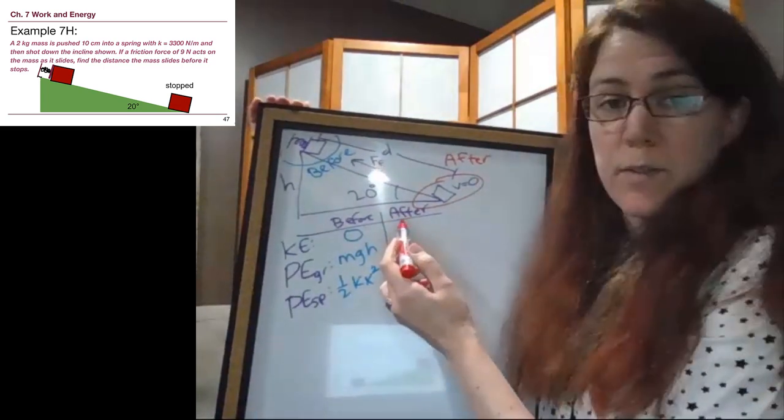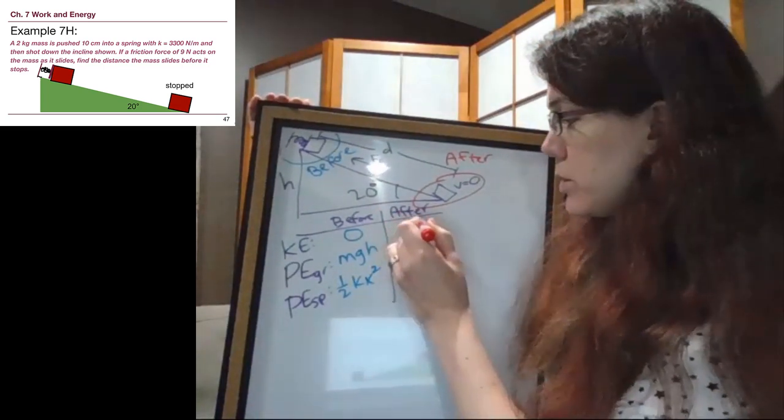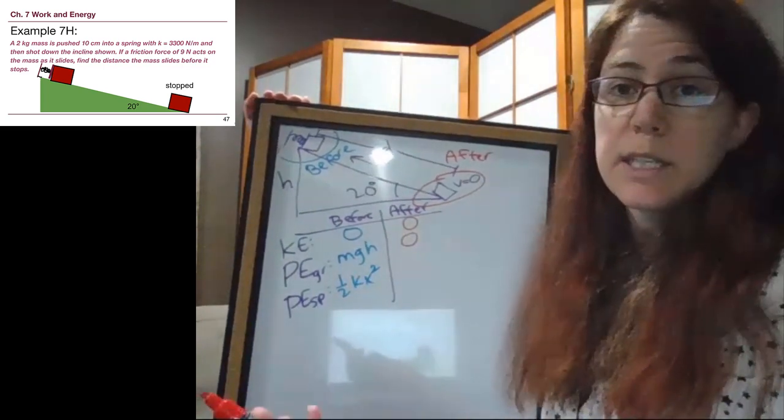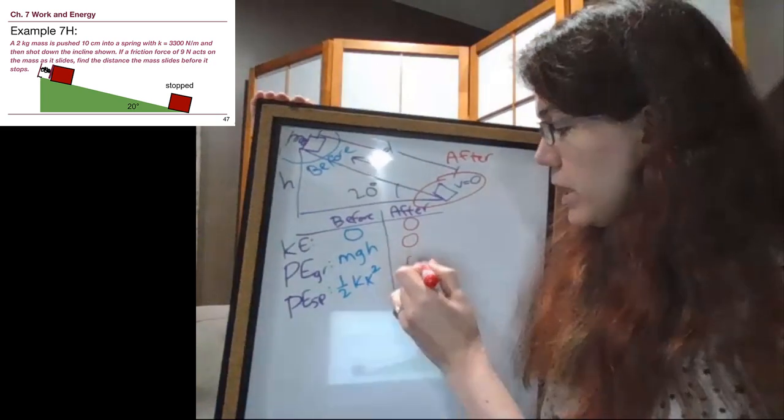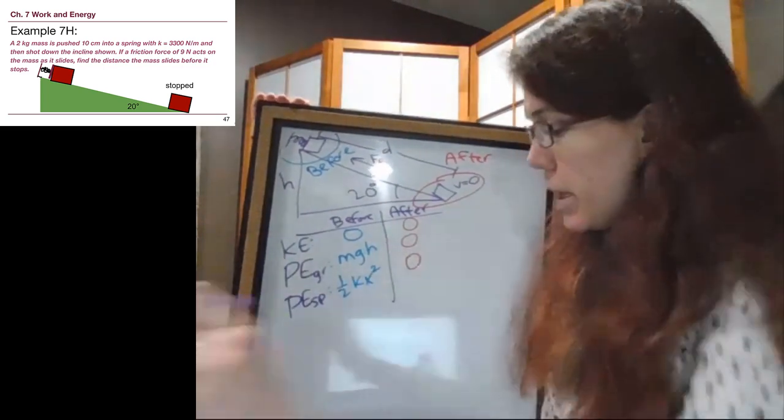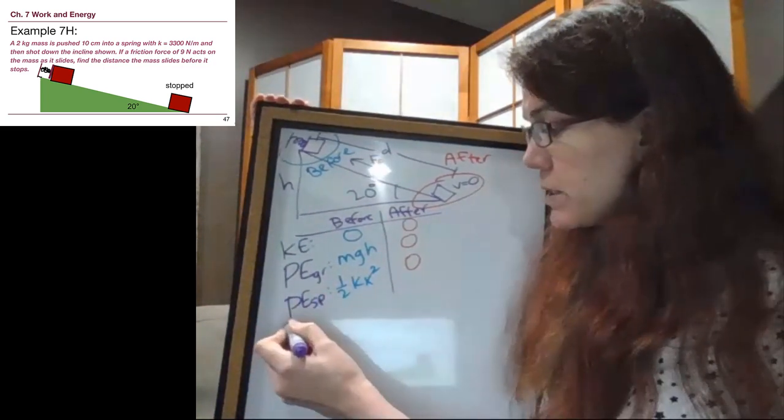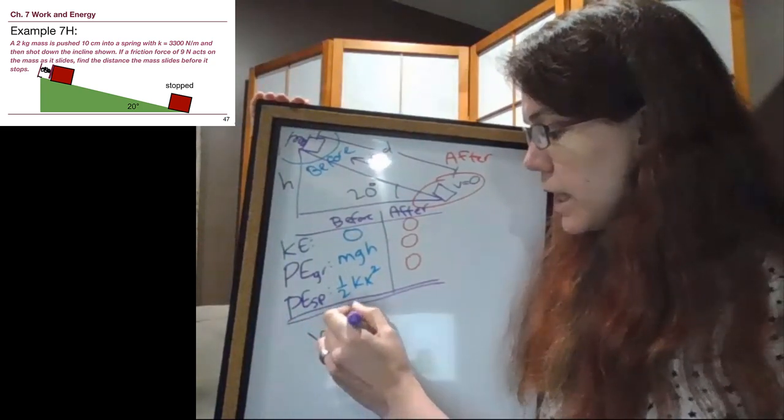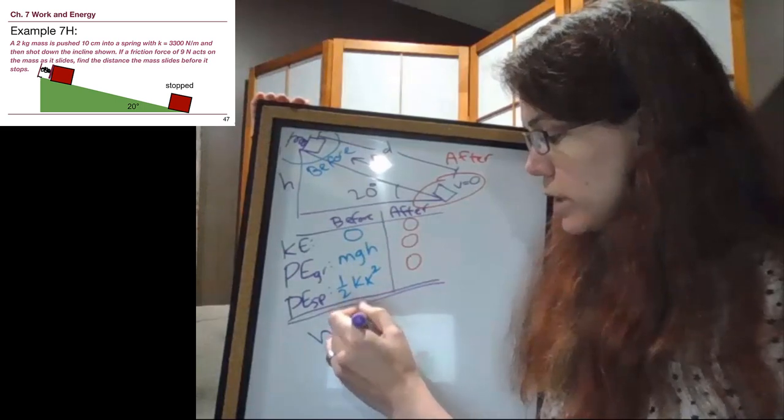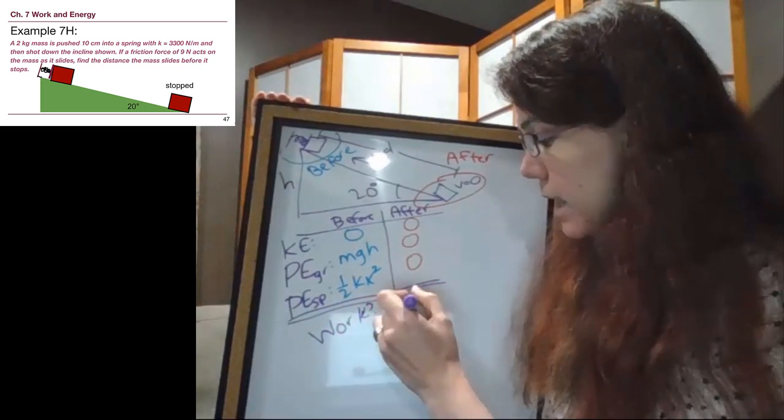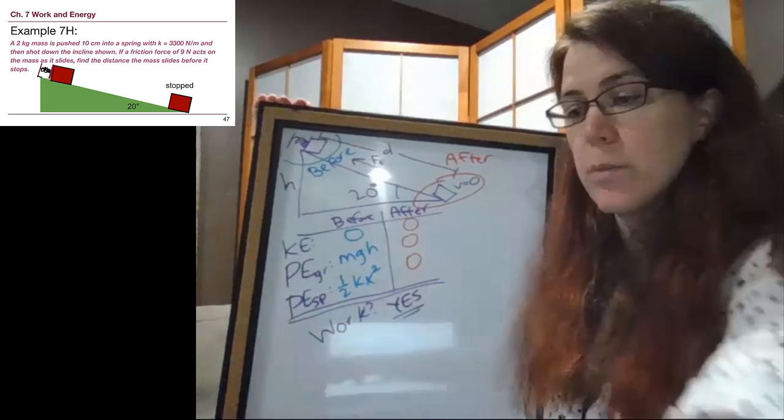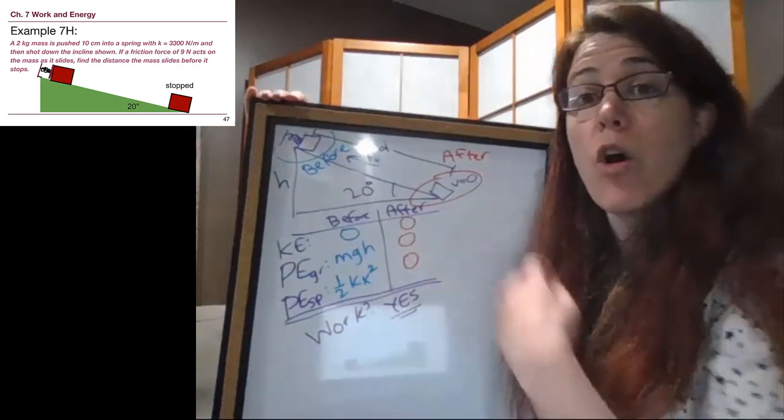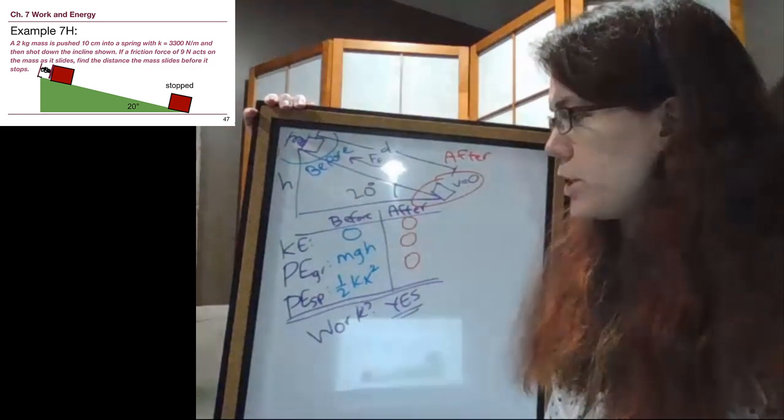Are we moving at the end of the problem? No, we are told that we're stopped. Are we higher at the end? No, we're at the bottom of the ramp. Is there a spring? No, we have lost all of our energy by the end. Even before we reread the problem to double check, we can glance at this situation and realize that there absolutely has to be a work term, because there has to be something that is taking away all of our energy. And that something is going to be friction.